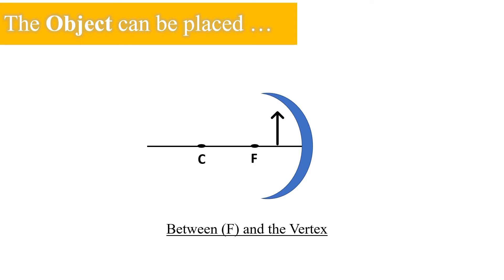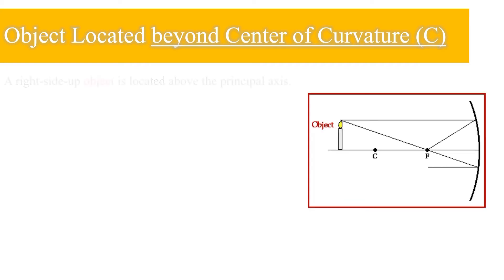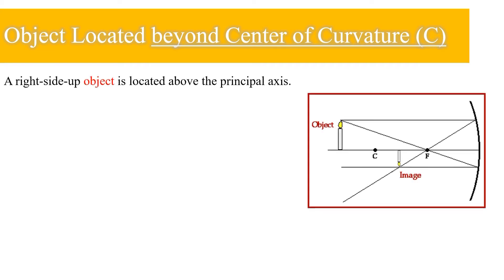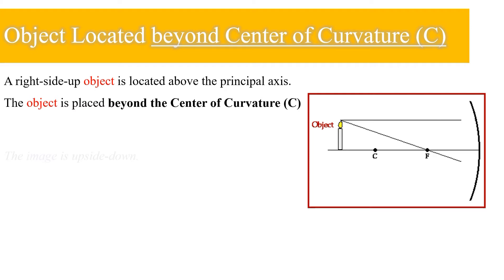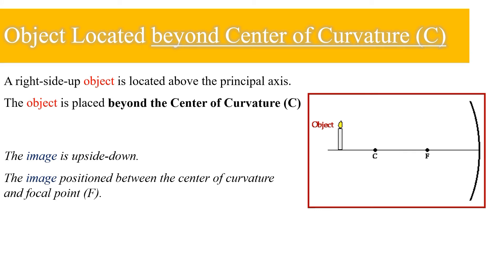Let us have an example when an object is located beyond the center of curvature. A right-side-up object is located above the principal axis, placed beyond the center of curvature. The image formed is upside down and positioned between the center of curvature and the focal point.